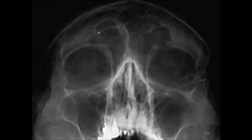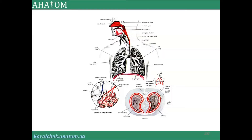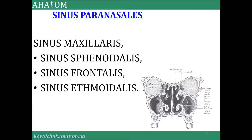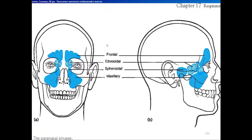And very important, it's not only to understand the sound organs in the human body, it's also different diagnostic methods, x-ray examination and other. And in the nasal cavity, you remember, present four sinuses — four types of sinuses: sinus maxillaris, sphenoidalis, frontalis, ethmoidalis.